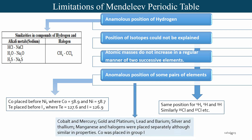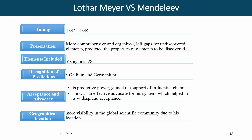Some pairs of elements in Mendeleev's periodic table also occupied anomalous positions. For example, cobalt and mercury, gold and platinum, lead and barium, silver and thallium, and manganese and halogen were placed separately although they were similar in properties. Additionally, cobalt was placed in Group 1. These were some anomalous positions of certain pairs of elements in Mendeleev's periodic table.